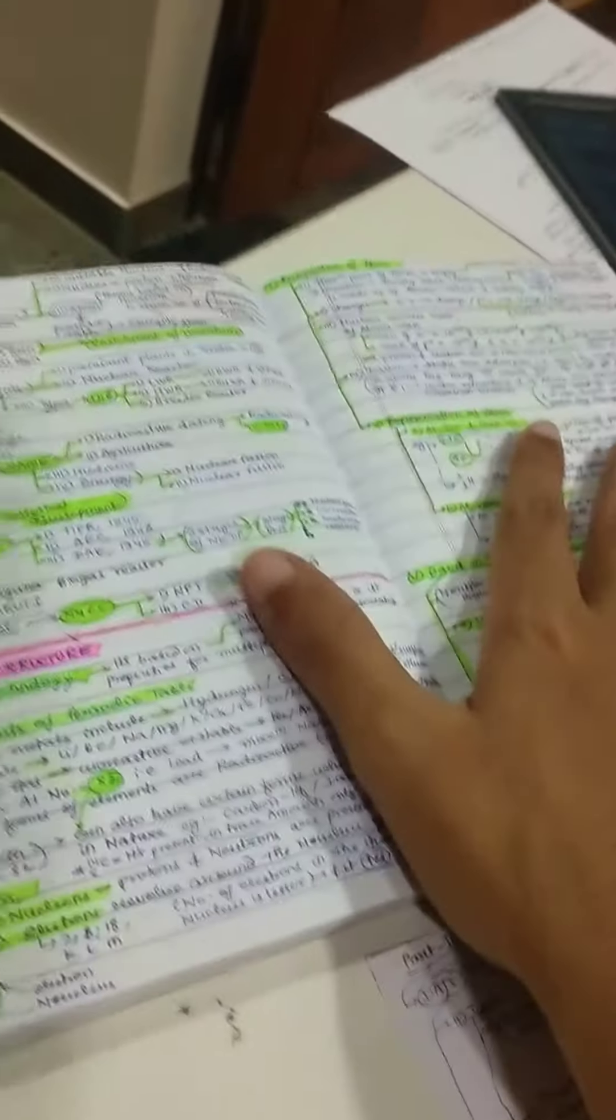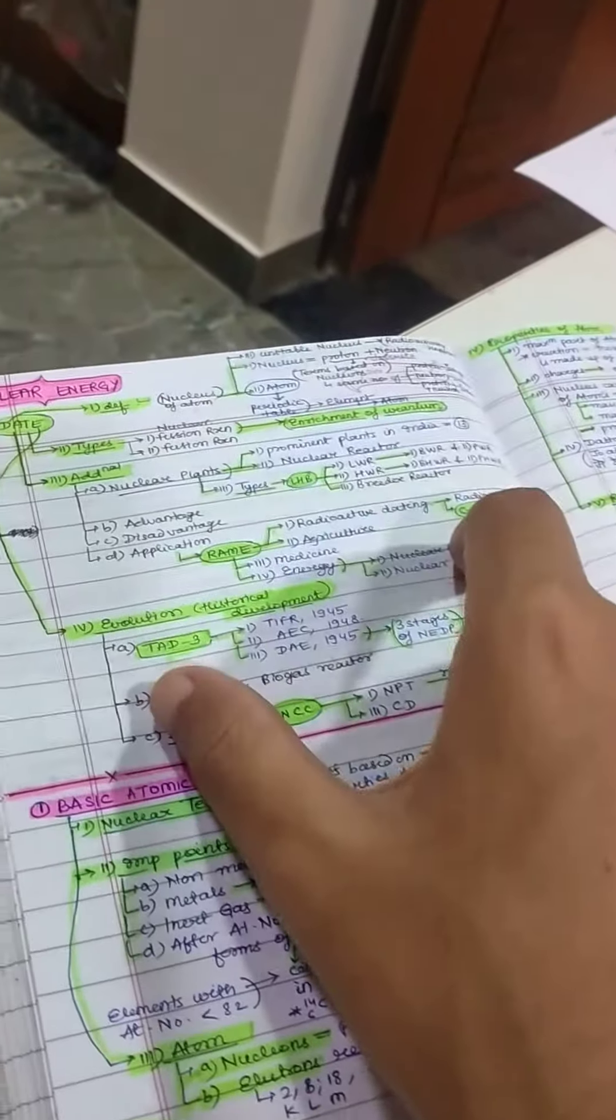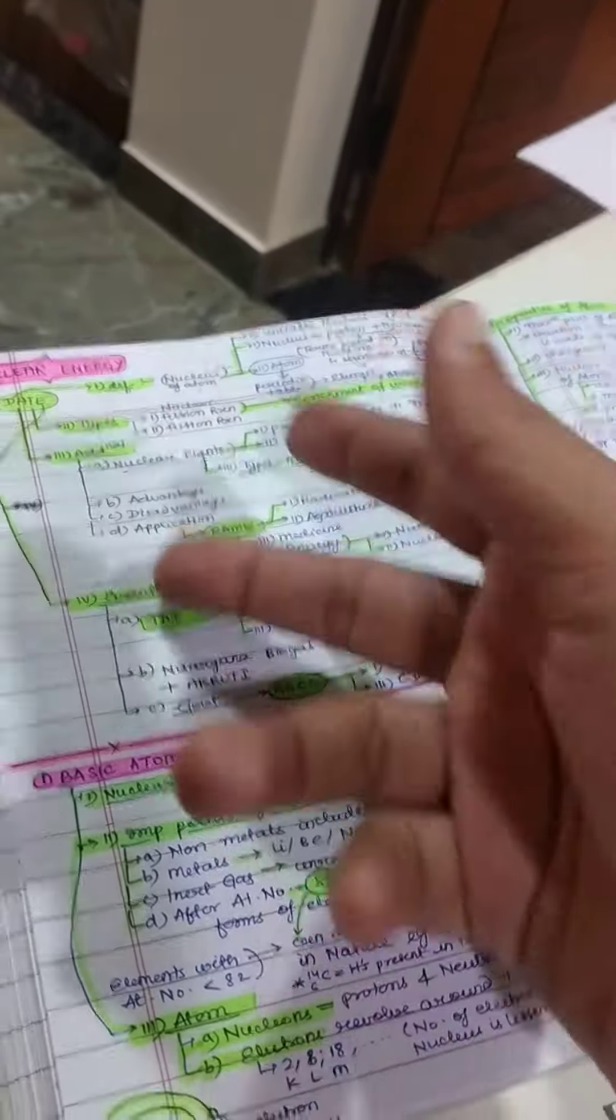while note making, I have arranged these topics: definition, additional information, types, evolution.